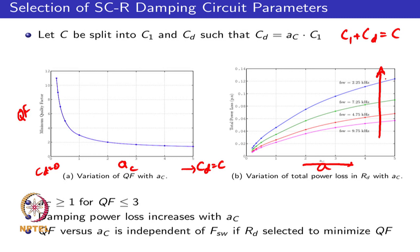The knee of this particular curve is close to AC being equal to 1. If you select AC equal to 1, you will get a quality factor of less than 3 with only a small further reduction as AC is increased beyond that. So selection of AC in this range might be a reasonable starting point, and taking AC equal to 1 might be a suitable design.